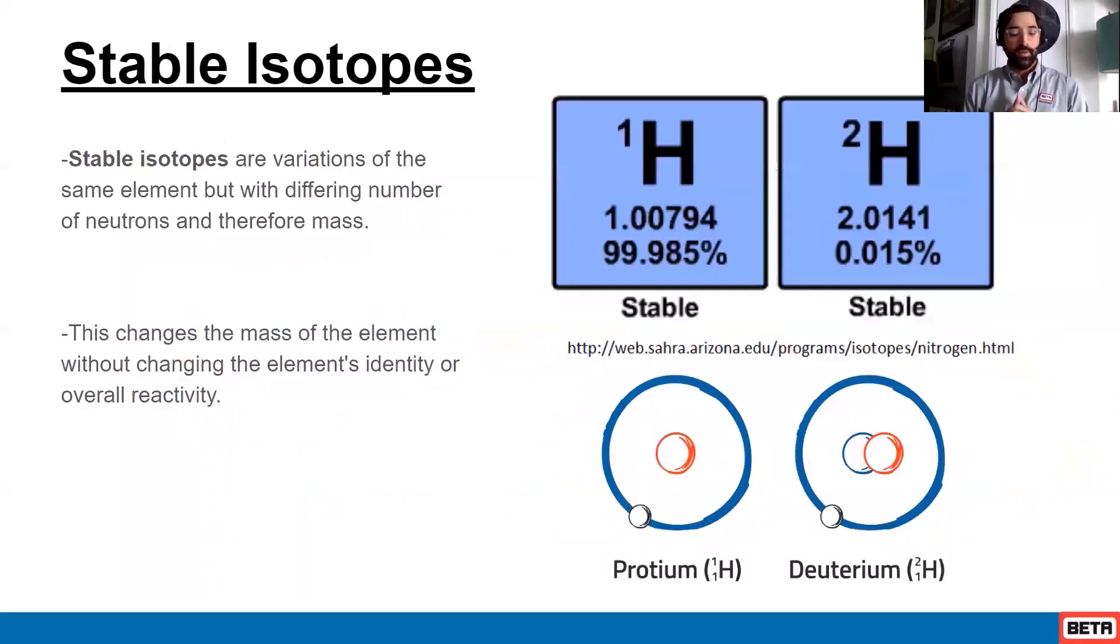Okay, so stable isotopes. What was JJ Thompson, what did he really discover? Well, what he was describing and discovering in his work was that you actually do have different forms of the same isotope, and those are referred to as stable isotopes.